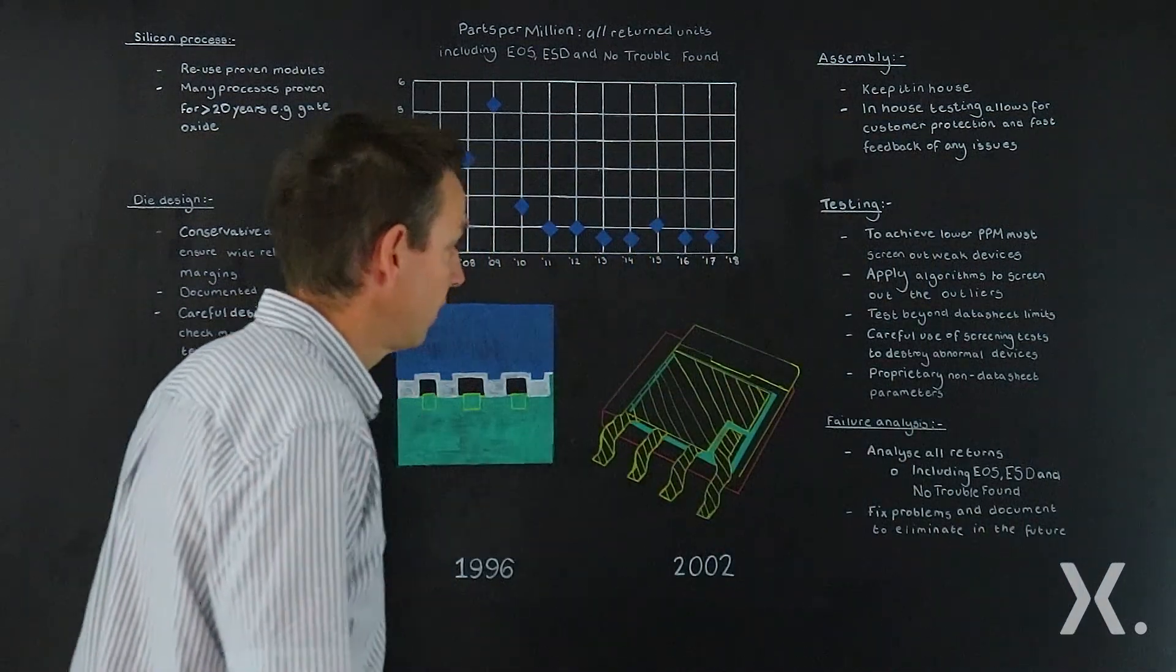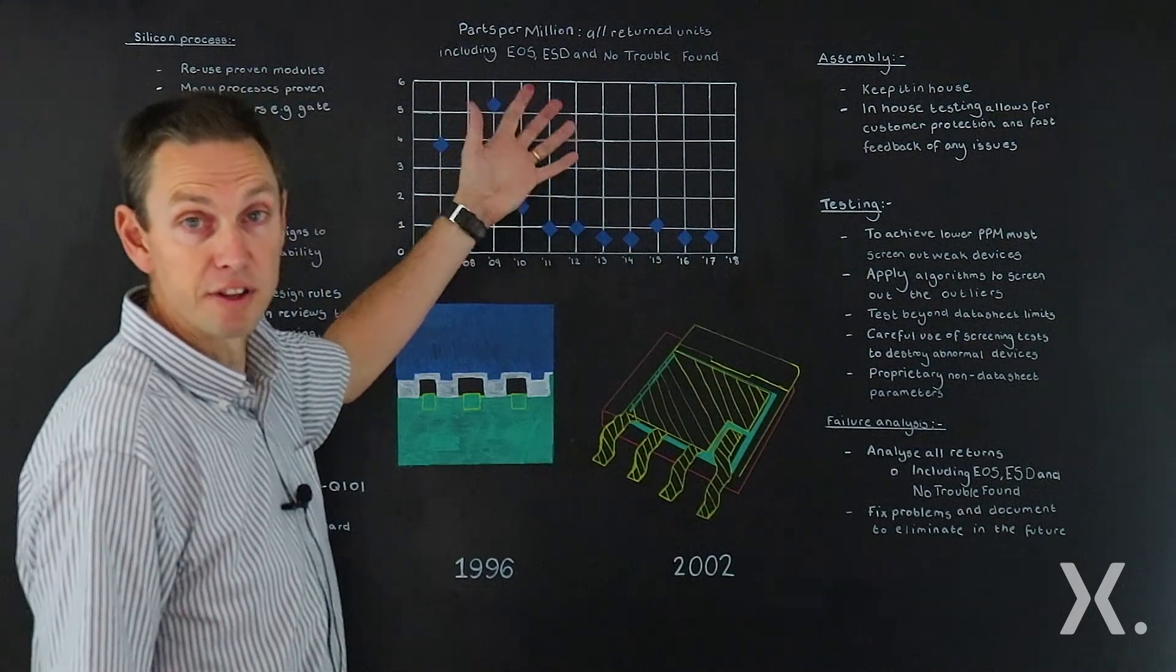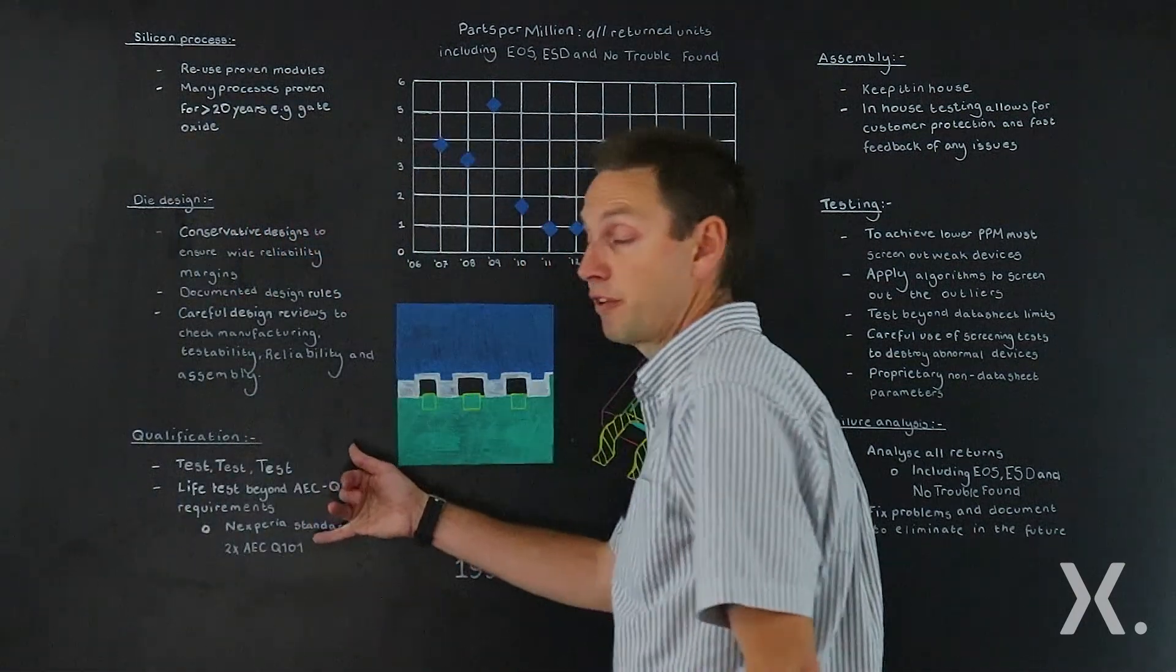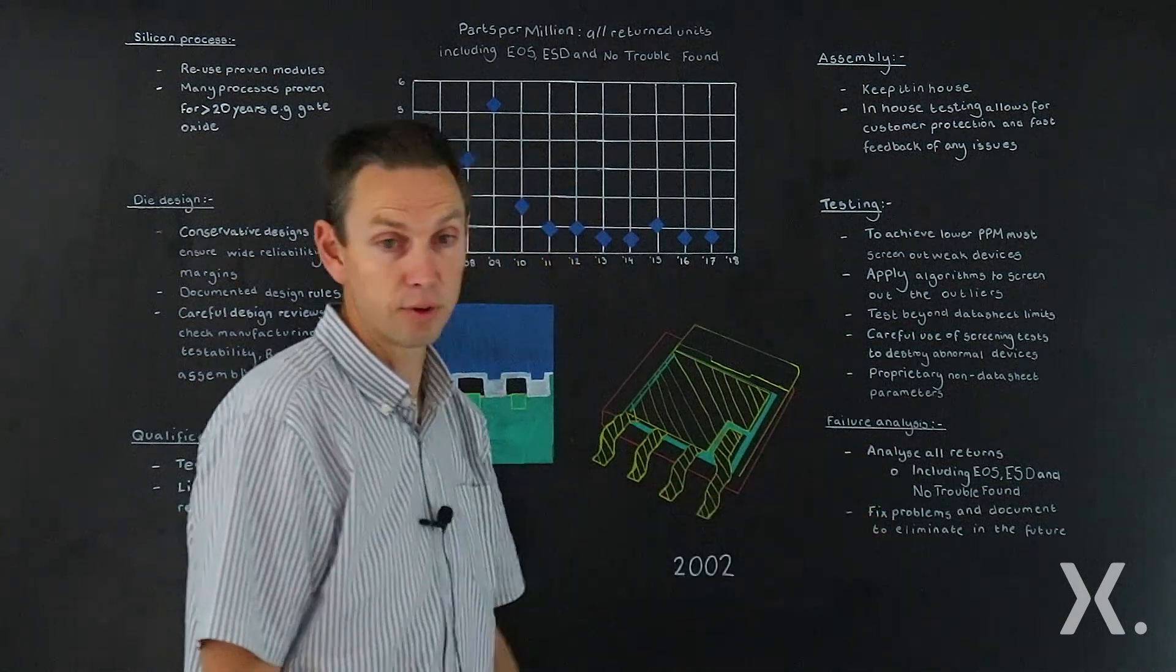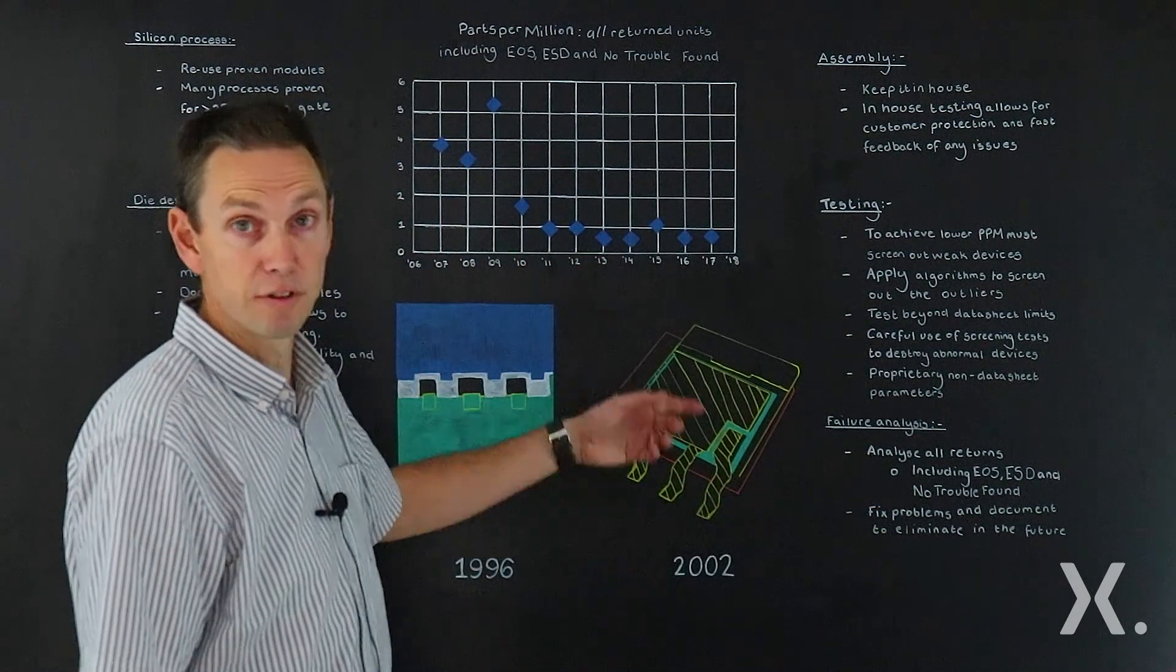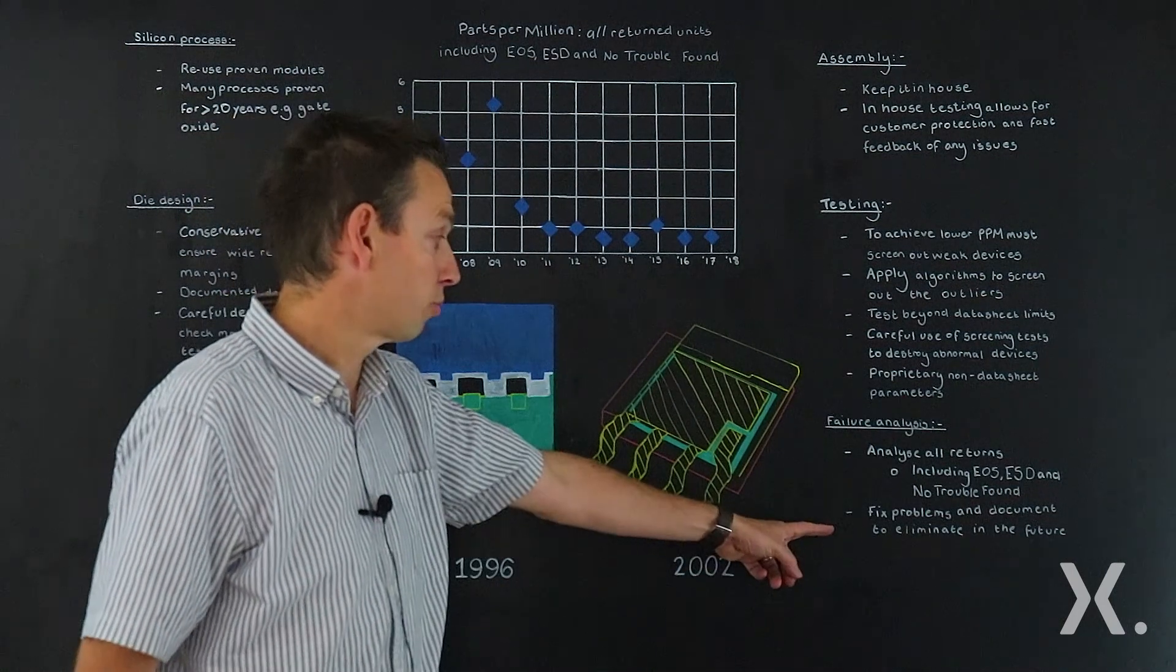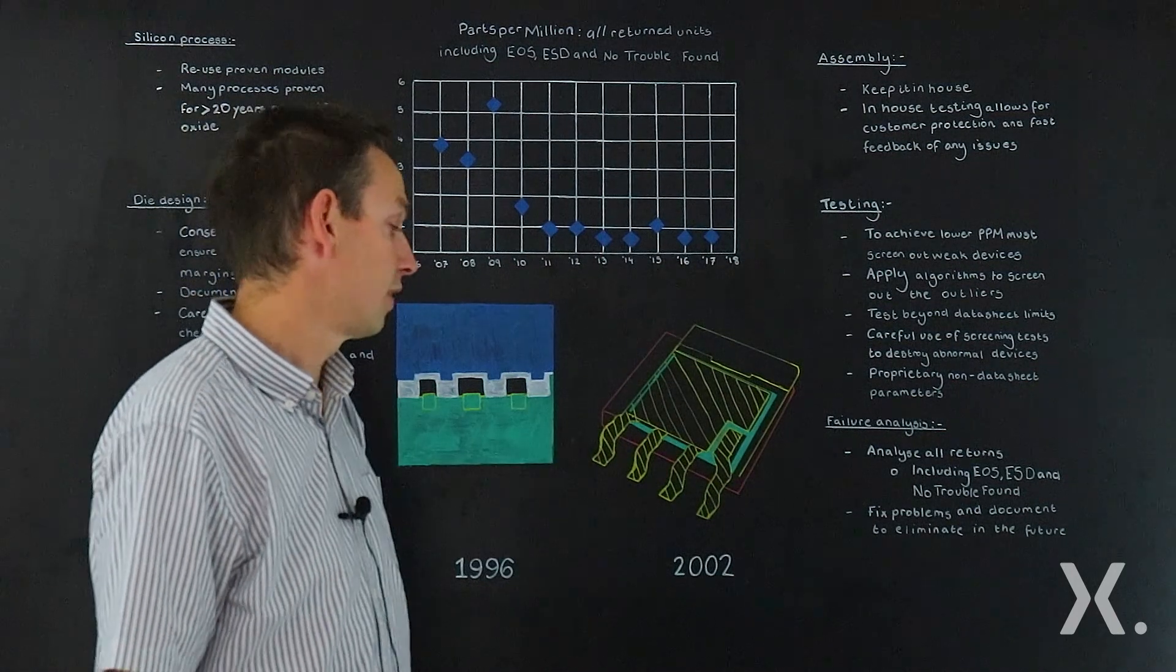And then the final part of the process almost takes us back to where we started from. When we get customer failures, it's very critical to work out why they've happened. During the qualification process, if we have failures, it's very critical to find out why they've happened. So failure analysis is absolutely a key part of the process. Doing excellent failure analysis, finding out what's gone wrong, and then documenting that, fixing the problems, and then carrying it back into almost a cycle here so we don't create the same problems in the next generation.